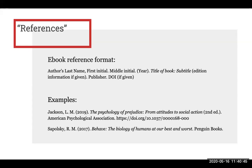Here is one more example of an e-book citation with the pieces plugged in. As you can see, it includes the author's last name, their first and middle initials, the year, the title, and the publisher. This particular e-book doesn't have an edition or DOI, so those elements were skipped.